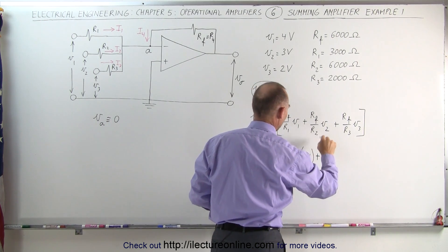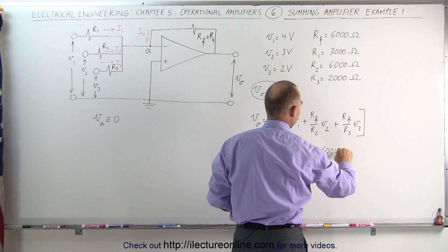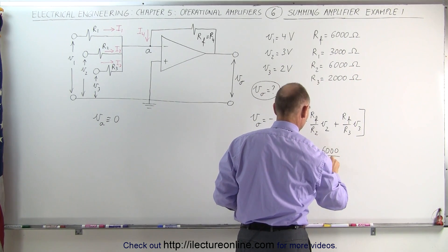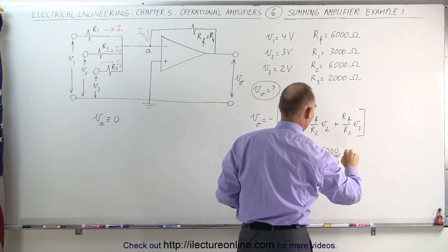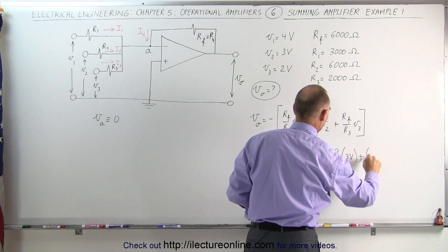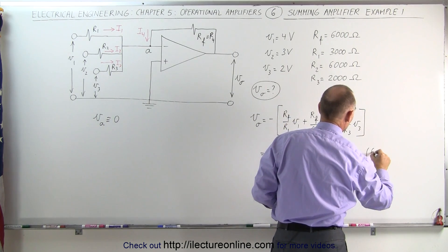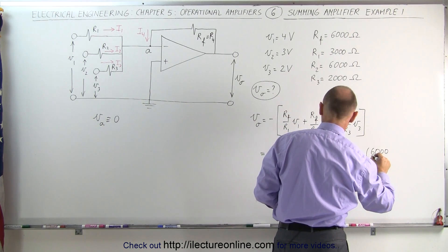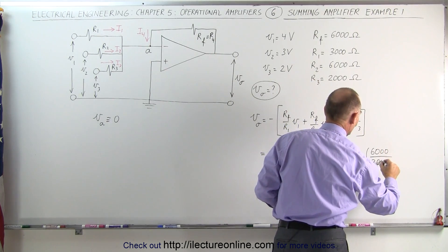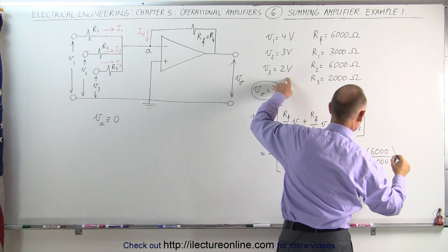Plus 6,000 times the resistance on the second input, which is 6,000 ohms, times the input voltage of 3 volts, plus we have another 6,000 ohms divided by the third resistor, which is 2,000 ohms, times the input voltage of 2 volts.